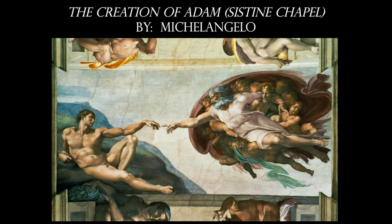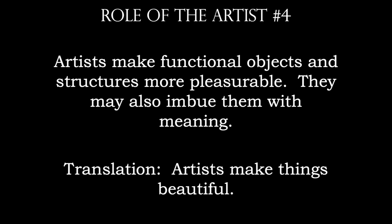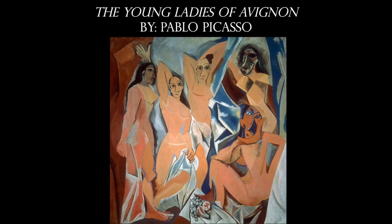The fourth role of the artist is that artists make things beautiful, and for most of us, this is what we need an artist to do. We want to look and see and be surrounded by beautiful things. Not all artists are going to accomplish this as we move into modern art in a later class — we've got abstraction, cubism, such as Picasso's work.